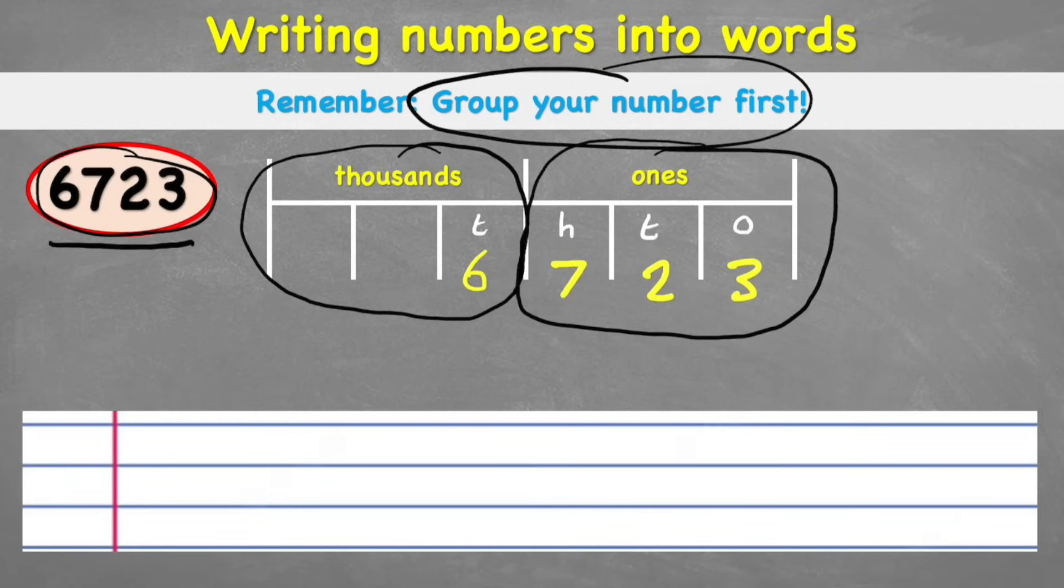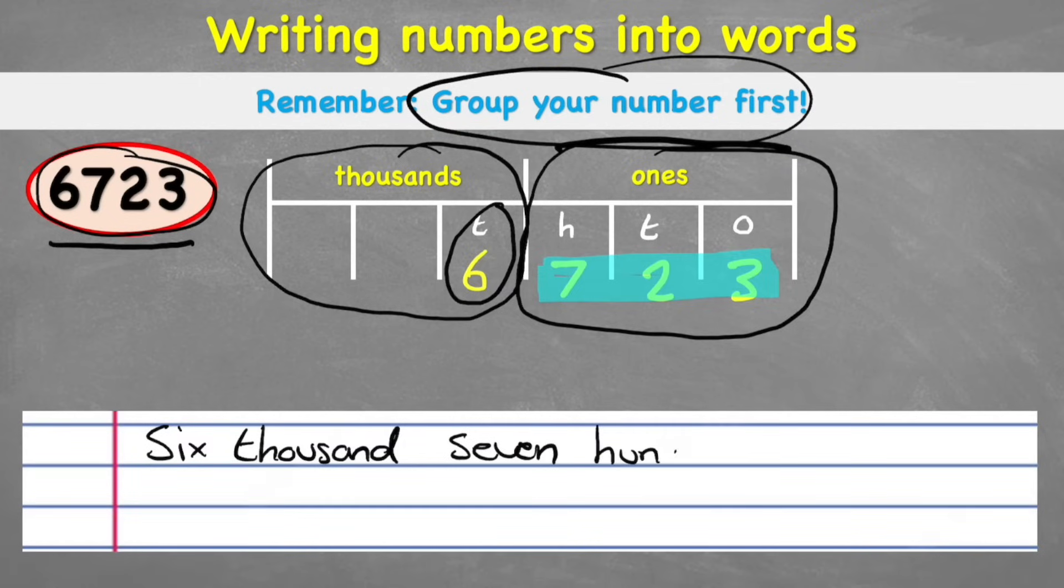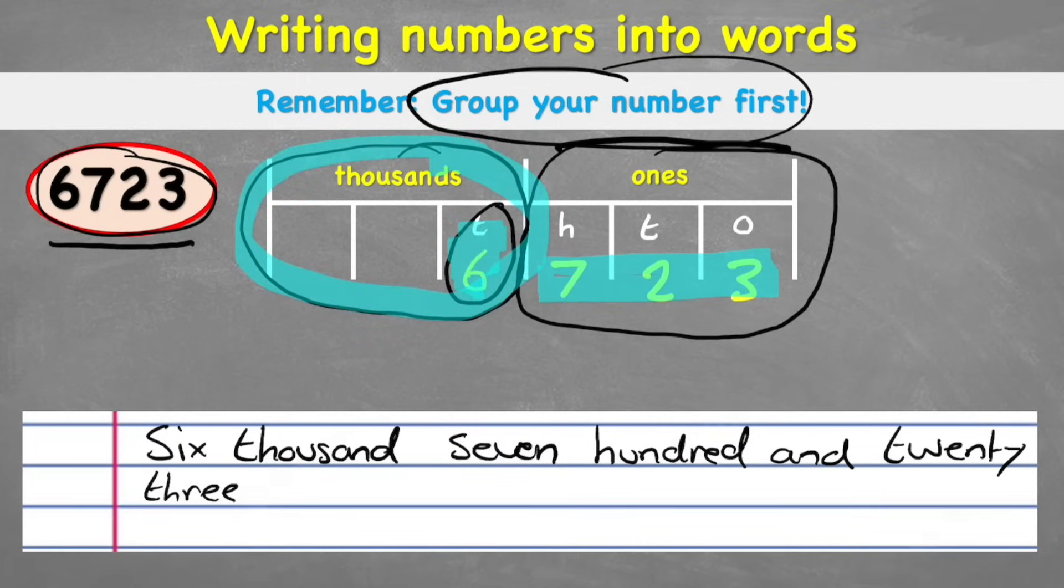Remember we're grouping our numbers. And I can see I'm in my ones group and now I have something in my thousands group too. So this is really important now because I'm going to say what I see in each group first. And in my thousands, I can see that I just have a 6. So the start of my answer will be six thousand. And now I come to the next group, my ones. And in the ones, all I can see is I have 723. So I just simply write that. Six thousand, seven hundred and twenty-three. So the only extra part of this question was this thousands part.